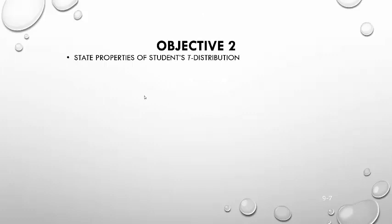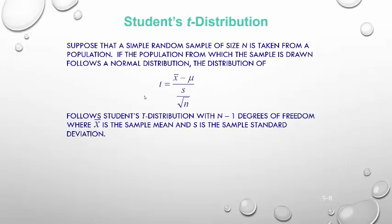Objective two: let's state the properties of the Student's t-distribution. Suppose that a simple random sample of size n is taken from a population that follows a normal distribution — like the weights of pennies probably are normally distributed. Then the distribution of t equals x-bar minus the population mean, divided by the sample standard deviation s divided by the square root of n.